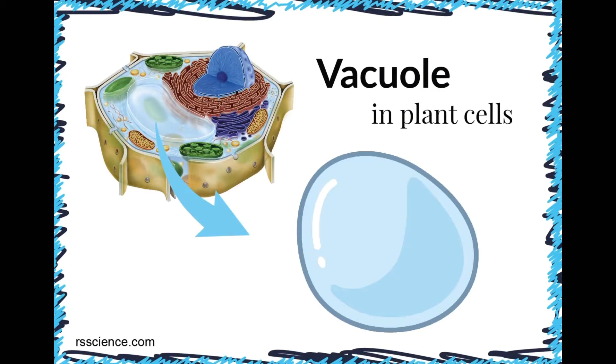The sixth one is centrioles, which are found in most animal and human cells and consist of bundles of microtubules. Centrioles aid the cell in reproduction. The seventh one is vacuoles, which transport food, water, or waste material within the cell. Each vacuole is bound by a membrane. Plant cells often have one or two larger vacuoles, but animal and human cells often have many smaller vacuoles.